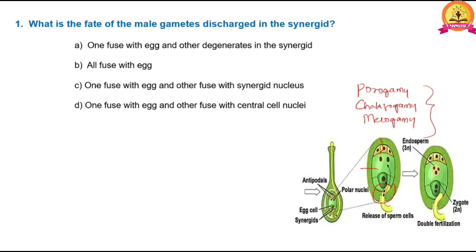With the guidance of filiform apparatus, the pollen tube enters into the cytoplasm of one synergid, where it releases two male gametes by dissolution of its tip. Out of the two male gametes, one fuses with the haploid egg to form a diploid zygote, which later develops into the embryo. The other male gamete fuses with the central cell nuclei (diploid secondary nucleus) to form a triploid primary endosperm nucleus (PEN), which later develops into the endosperm.